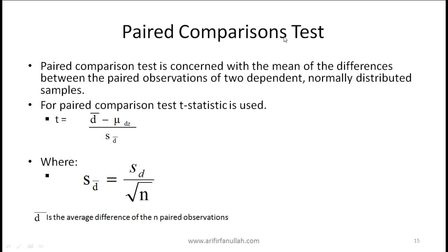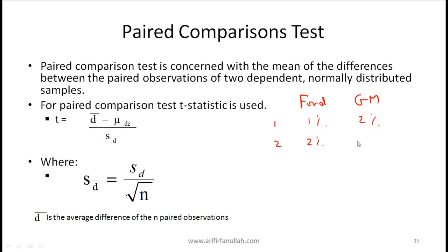A paired comparisons test concerns the mean of the differences between paired observations from two dependent, normally distributed samples. For example, suppose you compare the returns of Ford and General Motors over the last 20 months: one month ago Ford returned 1% and GM returned 2%; two months ago Ford returned 2% and GM returned 0%, and so on.